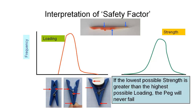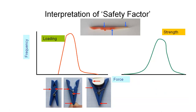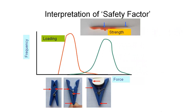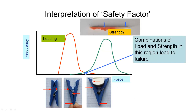As designers, we need to figure out what overlap is allowable between the strength of what we're designing and the loading it will be subjected to. If the lowest possible strength is greater than the highest possible loading the device will ever see, then the peg will never fail. But we can't afford to design all our devices to have a significant gap there so that nothing ever fails. We live in the real world and have to accept that sometimes an extreme loading condition will combine with a poorer strength item, and there's going to be some level of failure we have to tolerate. It's not economical to design it so that nothing will ever fail.